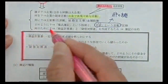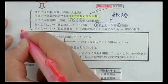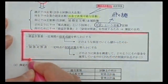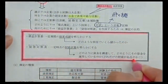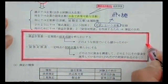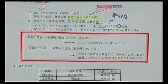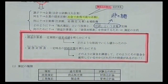簿記の目的は損益計算書と貸借対照表を作成することです。なぜ帳簿に記録するかといえば、この2つの報告書を作るために日々記録するわけです。